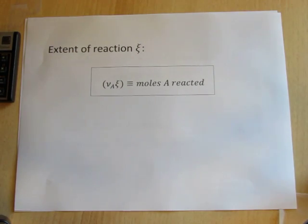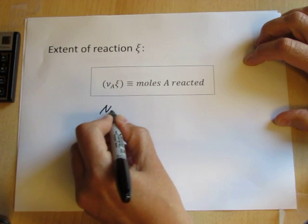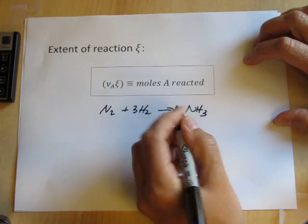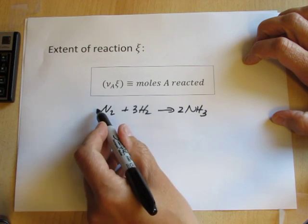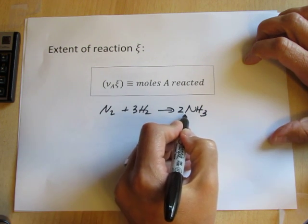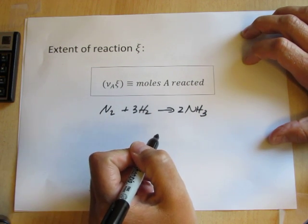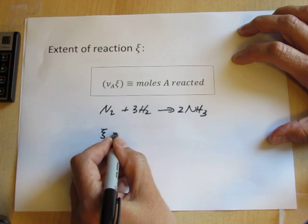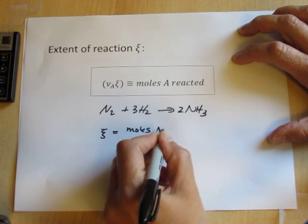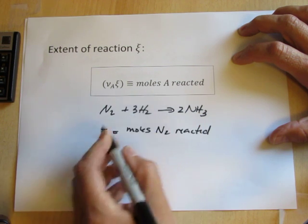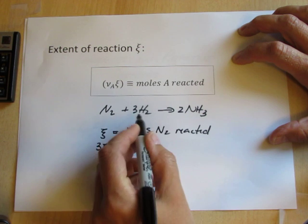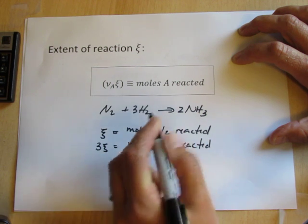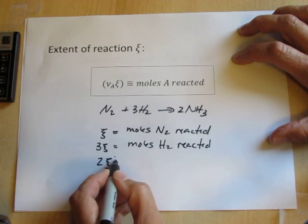For instance, if we start with the chemical reaction that produces ammonia, we have nitrogen that combines with hydrogen to produce ammonia. When we balance the reaction, we have the stoichiometric coefficients 1, 3, and 2 in front of the various compounds. So the extent of reaction tells us that 1 times Xi is the moles of nitrogen reacted, 3 times Xi is the moles of hydrogen reacted, and 2 times Xi is the moles of ammonia produced.